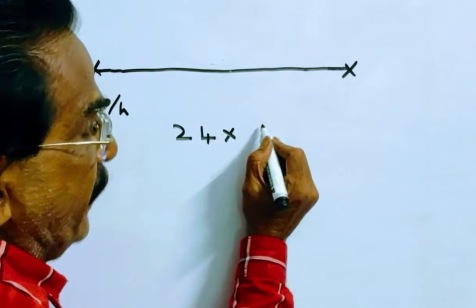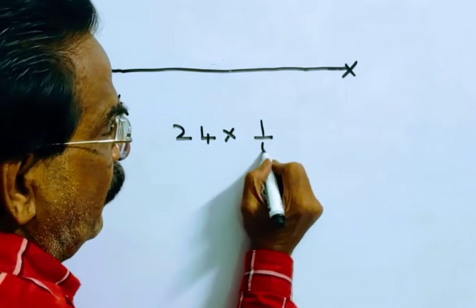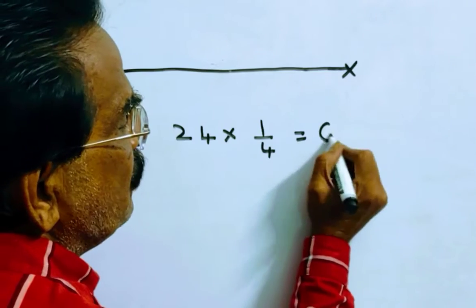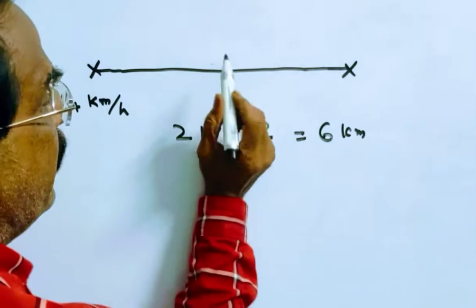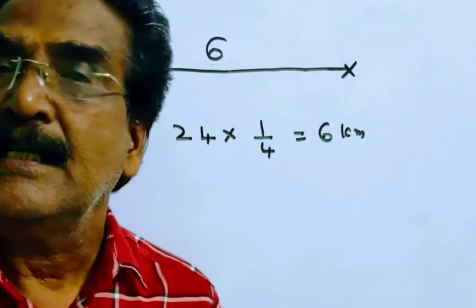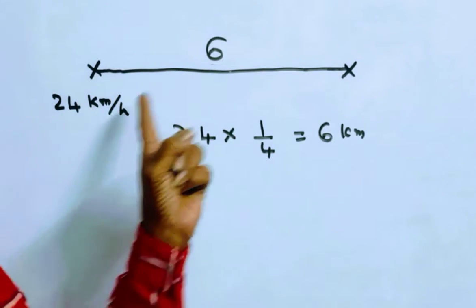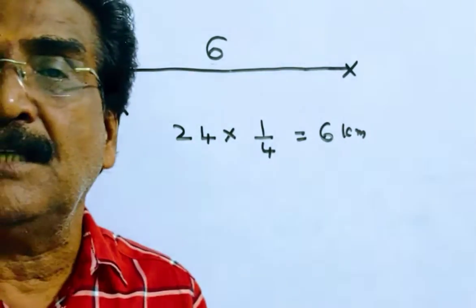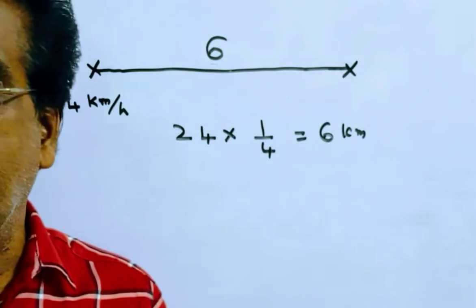15 minutes means 1 by 4 hour, that is equal to 6 km. So, in this 15 minutes time, the first cycle must have travelled 6 km. Now, the distance between the cycles is 6 km.